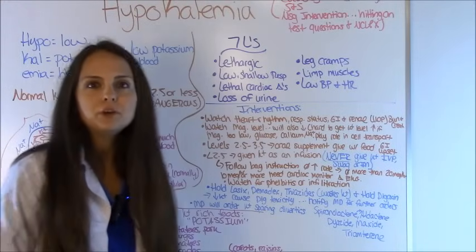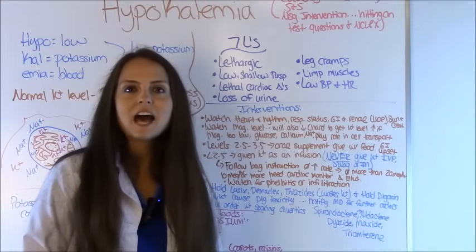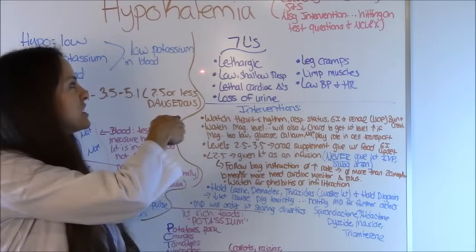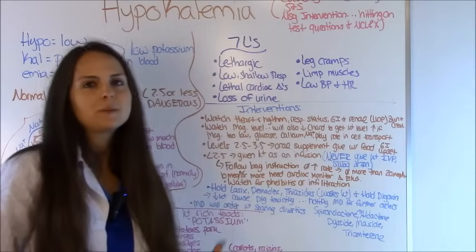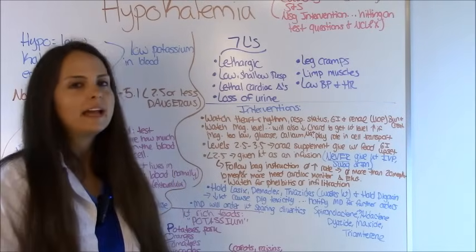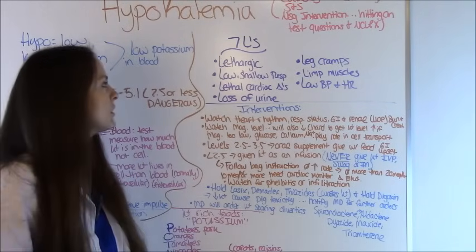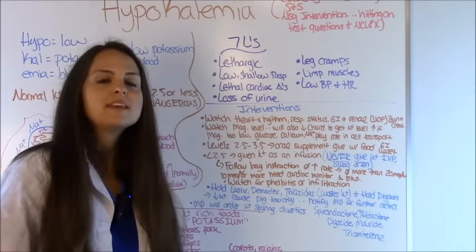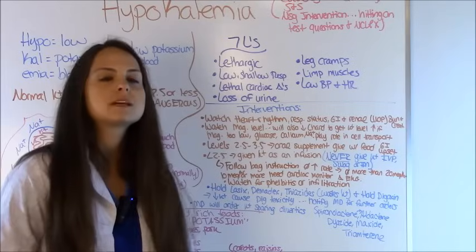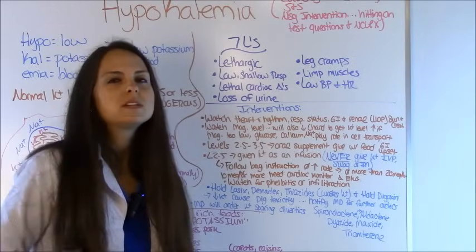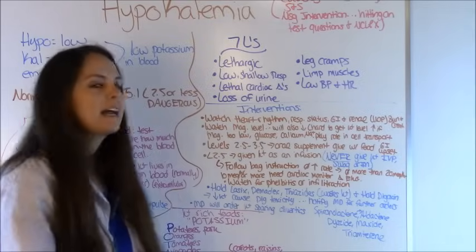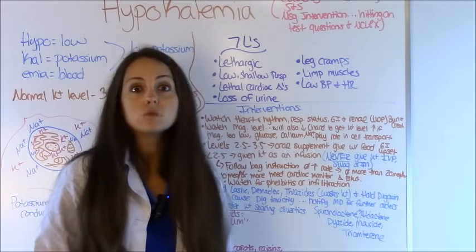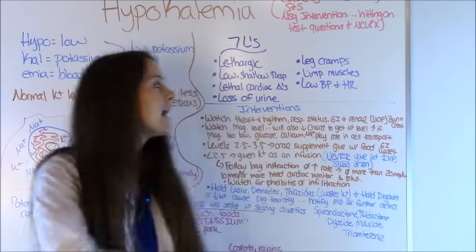Let's look at the seven L's to help you remember the symptoms of how someone would present with hypokalemia. First is lethargic — they're going to be tired and just laying around. Second, they're going to have low shallow respirations — remember that comes back to the inability to really use those muscles to breathe, it's going to be just really shallow. Third, lethal cardiac changes — remember those EKG changes, and if it gets really low, they can go into cardiac arrest.